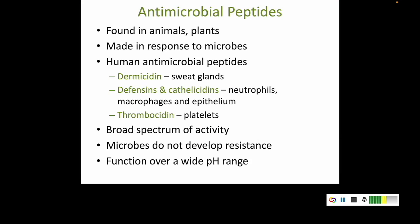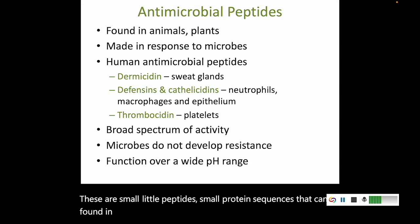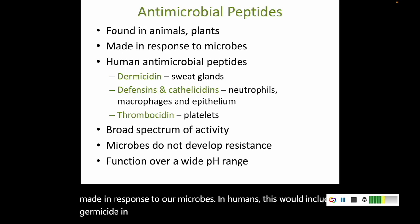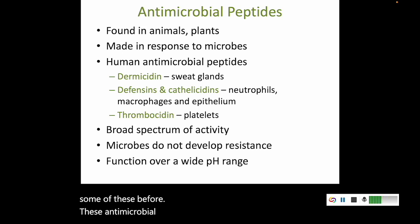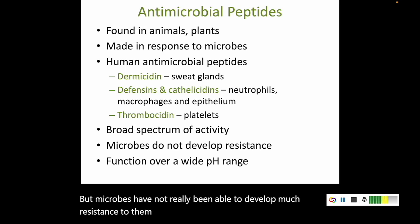Then there are antimicrobial peptides. These are small peptides — small protein sequences — that can be found in many different types of animals and plants, made in response to microbes. In humans, this would include dermocidin, defensins, and thrombocidin. These antimicrobial peptides have a broad spectrum of activity, microbes have not really been able to develop much resistance to them, and they function over a wide range of pH.